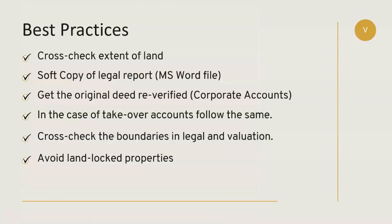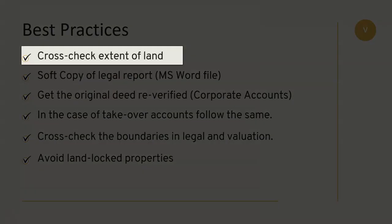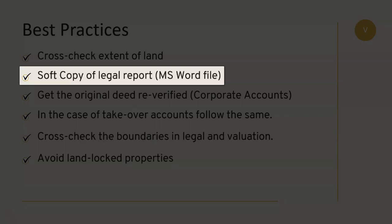Now let me talk about a few best practices which I usually follow at my workplace. Always cross-check the extent of land mentioned in the legal report with the valuation report — they must be the same. If they differ, seek explanation from your valuer and the lawyer. Get the soft copy of the legal report — the Word file — from the advocate. It will help you in preparing the sanction letter and mortgage document where you need to mention the details of the mortgage. Even a minor mistake in the description of the property can prove costly.